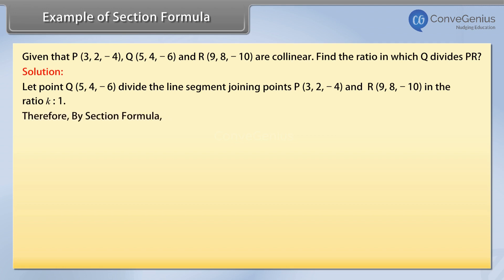Therefore, by section formula, (5, 4, -6) equals (k times 9 plus 3 over k plus 1, k times 8 plus 2 over k plus 1, k times (-10) minus 4 over k plus 1). On solving for k, we get k equals 1/2.